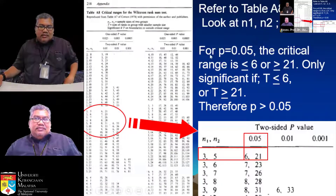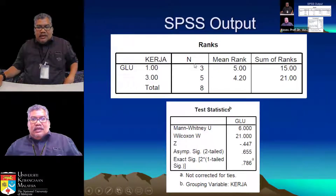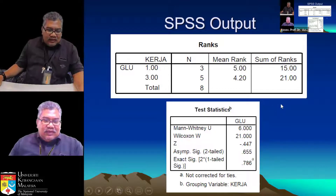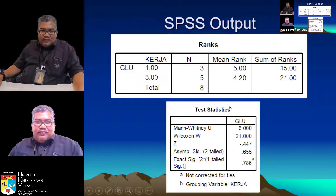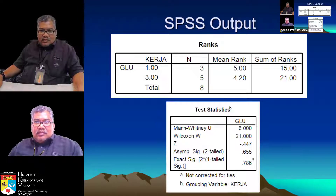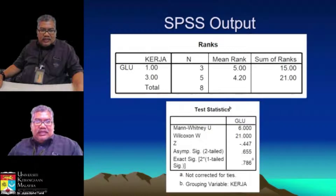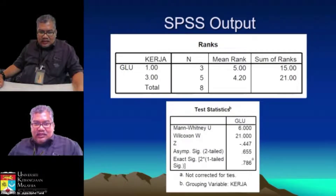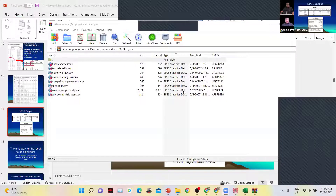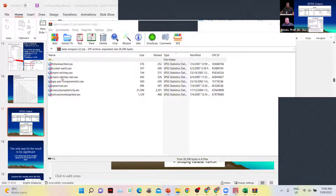I already downloaded data from the example website during the break. I'm going to open the dataset in SPSS now. This is the dataset I showed you earlier — the taxi driver and bus driver data. You can see the 'kerja' variable where one is bus and three is taxi. To do the non-parametric test, click Analyze, Non-parametric Tests, Legacy Dialogs. Remember, there are two independent samples — bus driver and taxi driver, so they are independent.